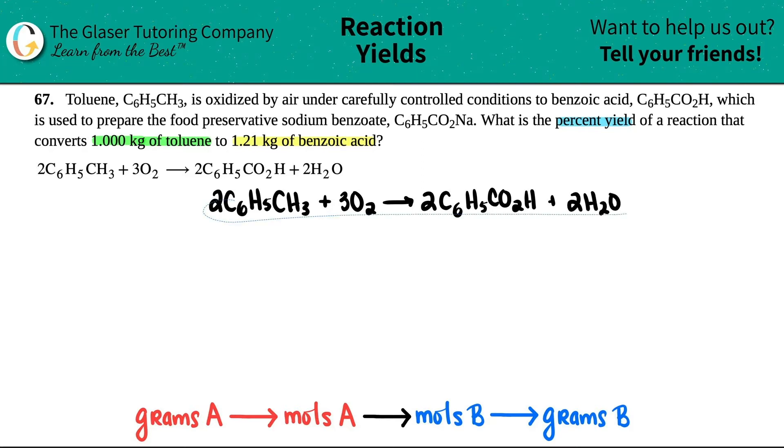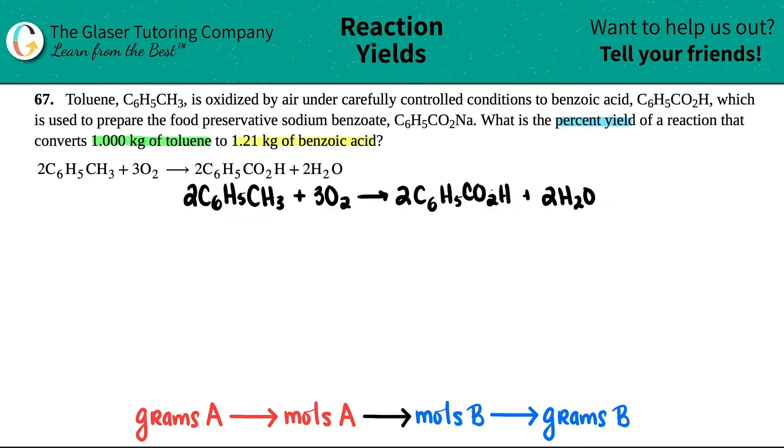So I have 2C6H5CH3 plus 3O2. Now I'm already noticing that there are coefficients here, the big numbers in the front. So that means thankfully they balanced the equation for us. Thank you very much, so we don't really have to worry about that.